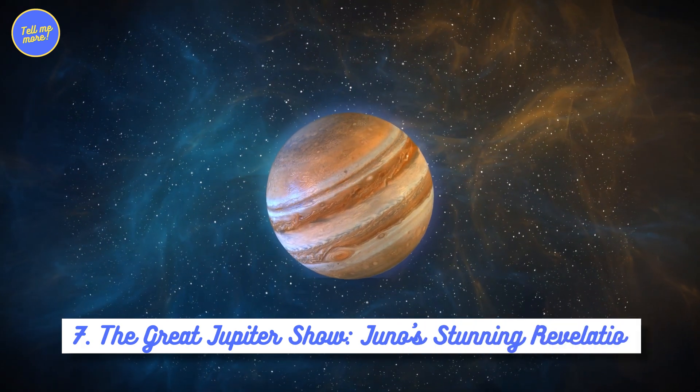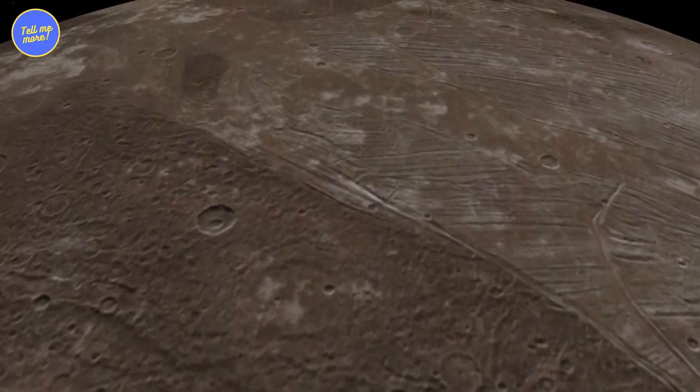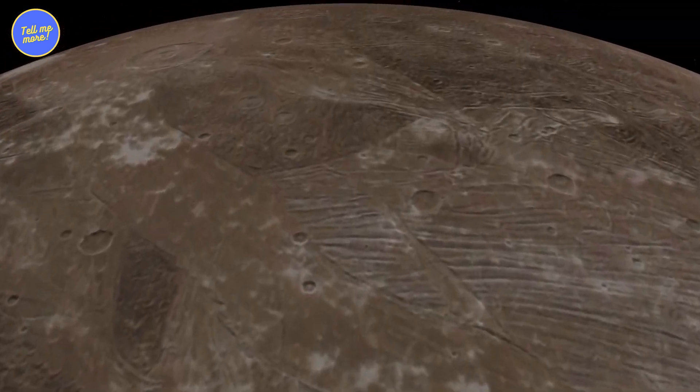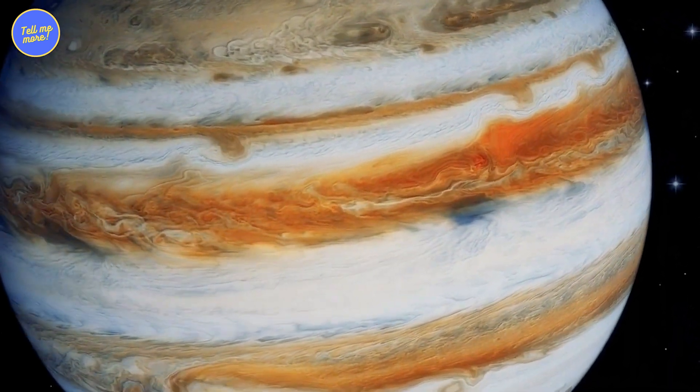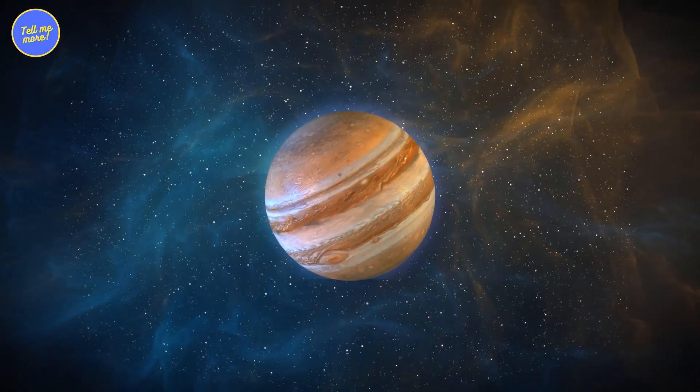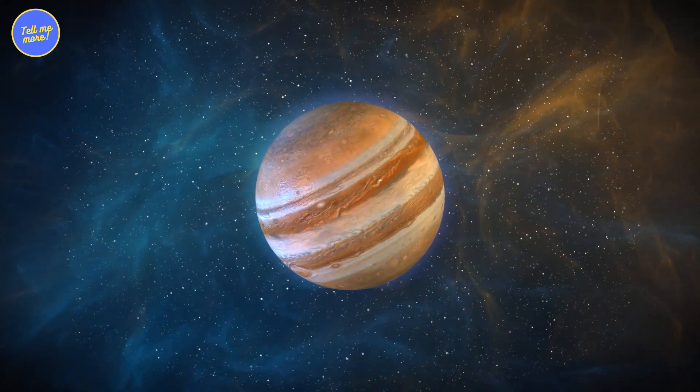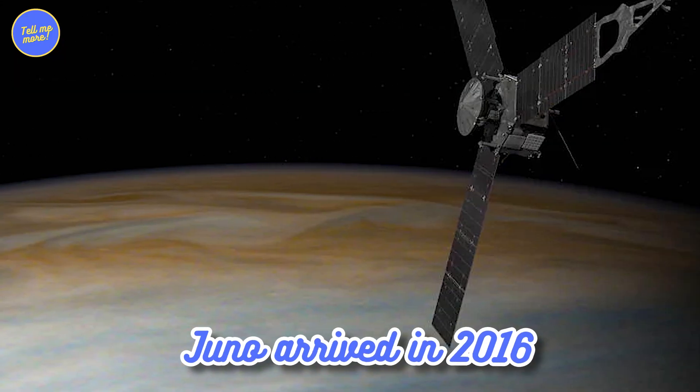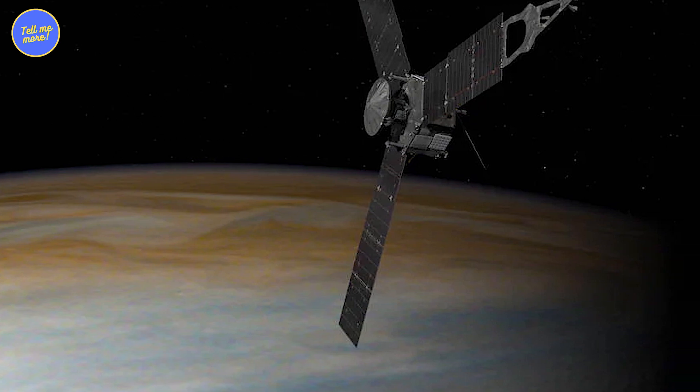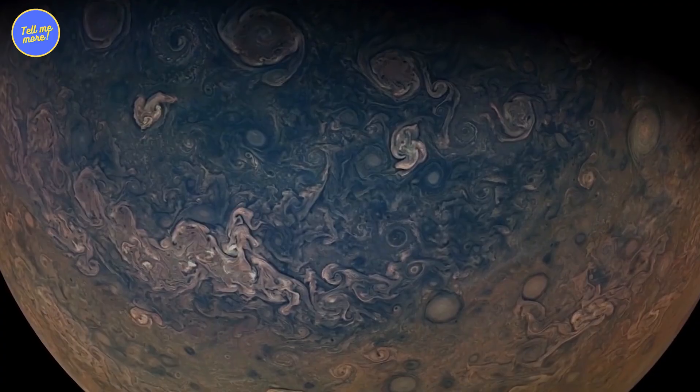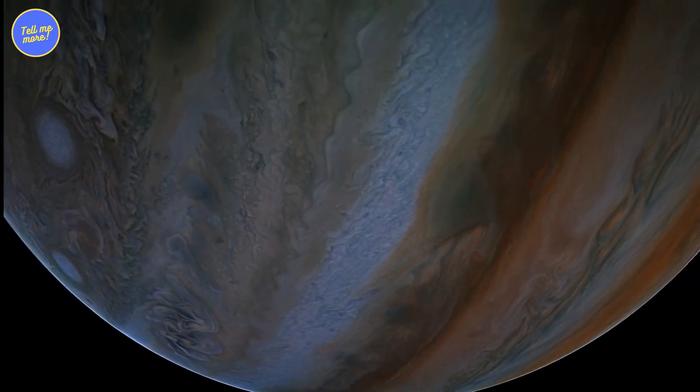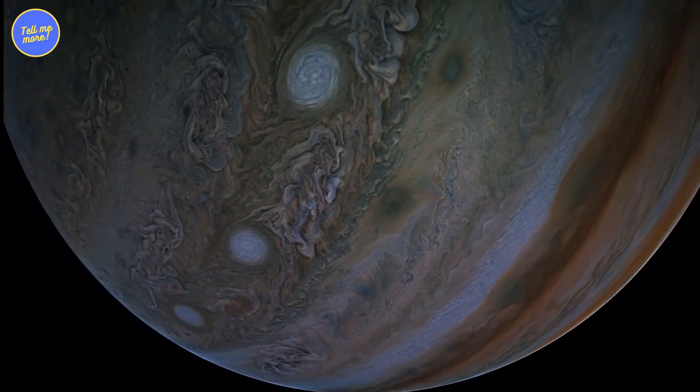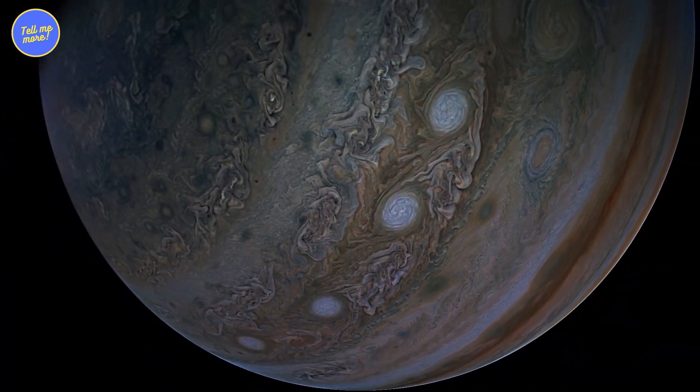7. The Great Jupiter Show Juno's Stunning Revelations. Jupiter, the gas giant with its swirling bands of clouds and iconic great red spot, was like the mystery you never thought you'd solve. That is, until Juno arrived in 2016 with its fancy instruments and cutting-edge tech. This spacecraft didn't just take pretty pictures of Jupiter. It gave us backstage passes to the cosmic concert of chaos happening in its atmosphere.